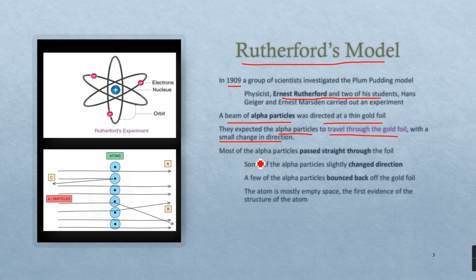When they conducted the experiment, most of the alpha particles passed straight through the foil. However, some of the particles had a slight change in direction, and some of those alpha particles bounced back off the gold foil.